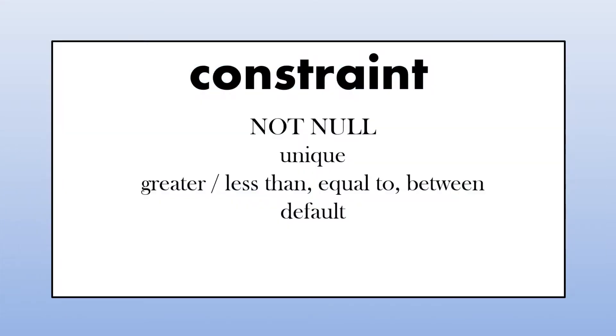So what do we have remaining? Constraints. We have constraints like not null, unique. Not null means we don't leave empty. Unique means no duplicates. We could have greater than or less than, greater than zero or less than 100, equal to or between. We can even have default values, maybe default to null or default to zero.